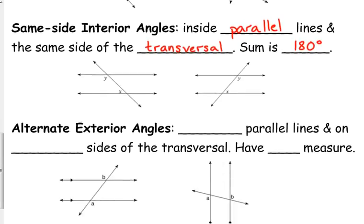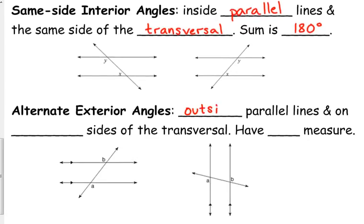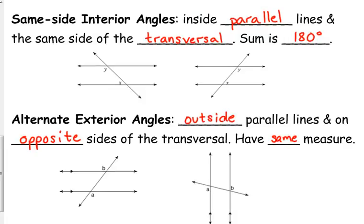Alternate exterior — exterior means they are outside of the parallel lines, and they are on opposite sides of the transversal. They also have the same measure because, like alternate interior angles, they form vertical angles. So our two alternates — alternate exterior and alternate interior — have the same measure. If you have same side interior or same side exterior, those have a sum of 180 degrees.